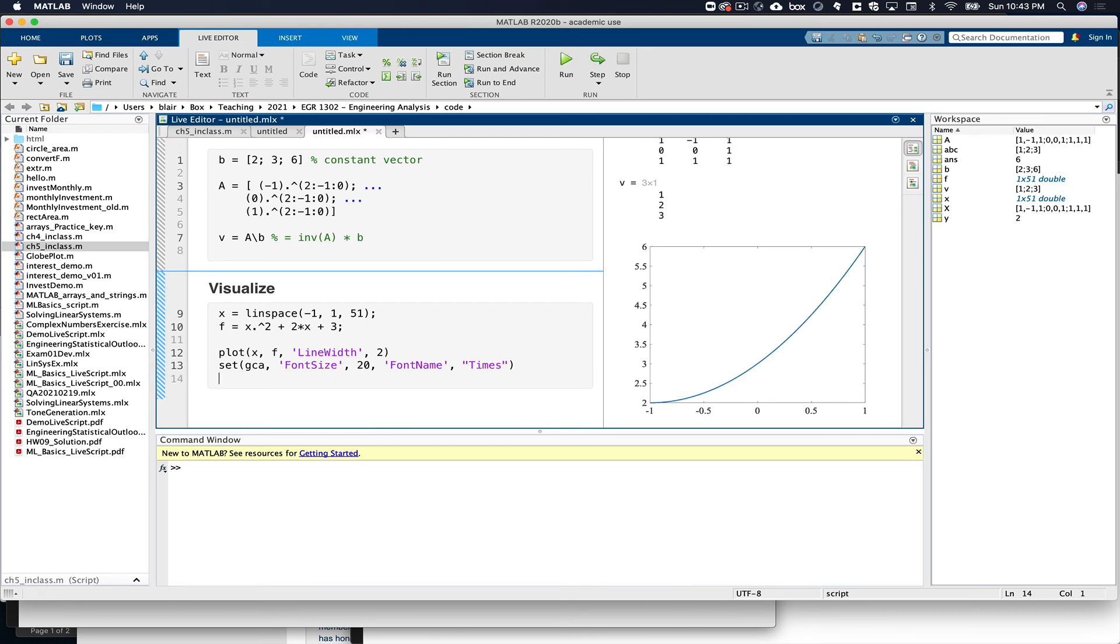Okay, and then we'll turn the grid on. And just make it a little nicer. And you can see at negative 1, f of x is 2. At 0, f of x is 3. At 1, f of x is 6. That's exactly what we wanted.